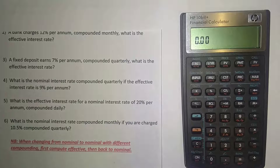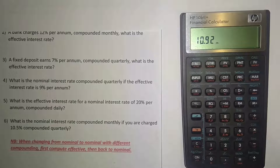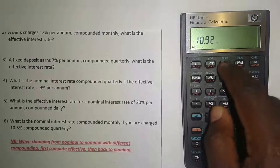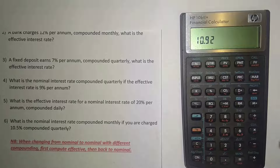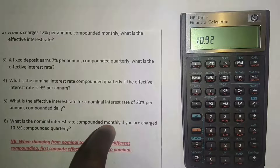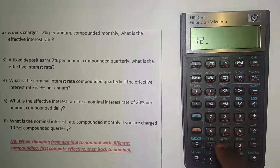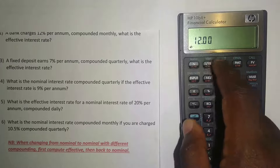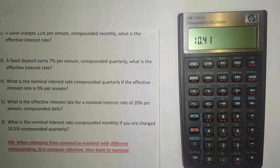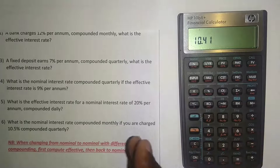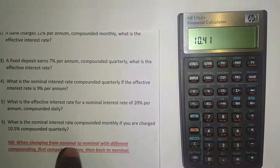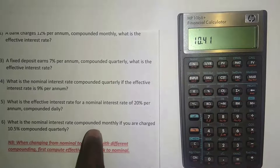Now we work from effective back to nominal compounded monthly. Press 10.92 (the effective rate we just calculated), then orange, then PV to enter the effective interest rate. Then put 12 for monthly compoundings, press orange, then PMT. Then press orange and I/YR to get the nominal interest rate of 10.41%. We moved from a nominal interest rate of 10.5% compounded quarterly to a nominal interest rate of 10.41% compounded monthly.